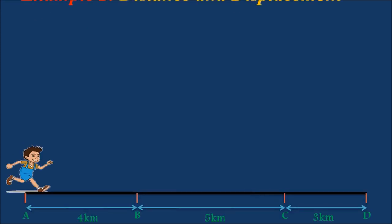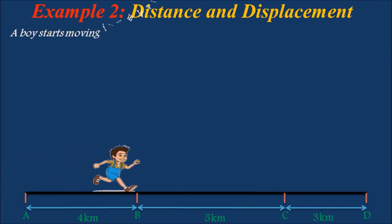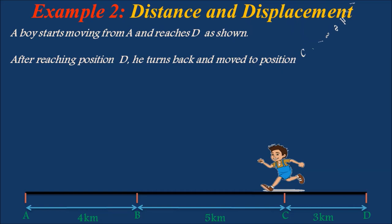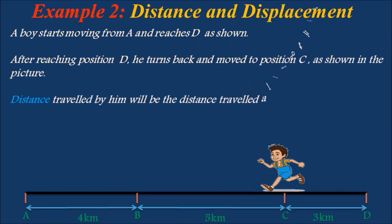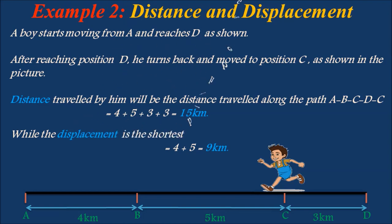Consider another example where a boy starts moving from A and reaches D through path A, B, C, D. After reaching D, he turns back and moves to position C. The distance traveled is along path A, B, C, D, C, which equals 4 plus 5 plus 3 plus 3, totaling 15 kilometers. The displacement is the shortest path between A and C, equal to 4 plus 5, which is 9 kilometers.